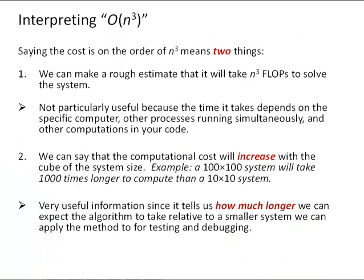So what does that mean when we say it's on the order of n cubed? Well, it tells us that we can make a rough estimate that it will take n cubed flops to solve the system, or for the forward elimination step to solve the system, so a 10 by 10 system would take approximately 10 cubed equals 1,000 flops for the forward elimination step.